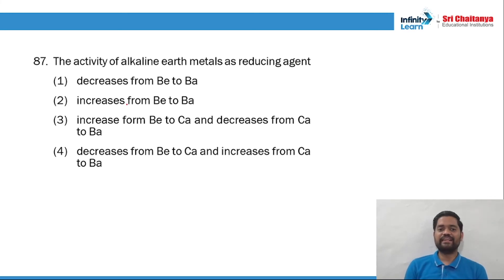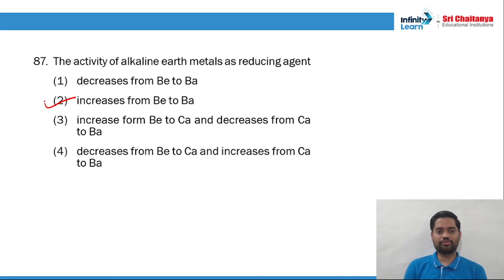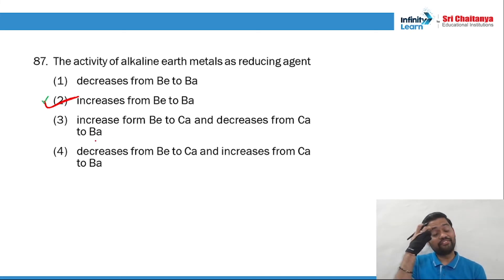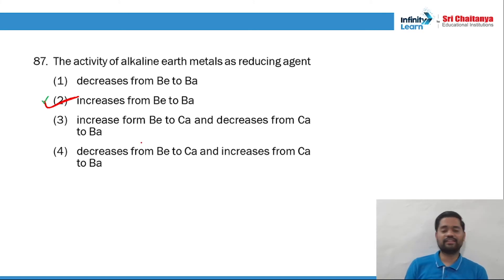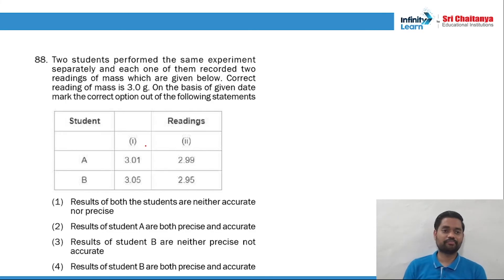Question 87: as size increases, effective nuclear charge decreases. There is no influence of the nucleus on the valence shell electrons, so it becomes easy to remove the electron. Oxidation tendency increases — meaning reducing agent tendency increases.